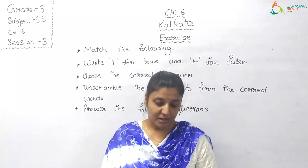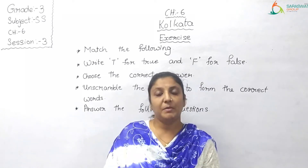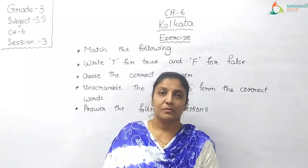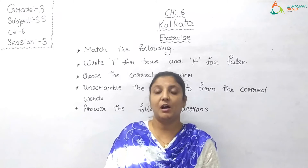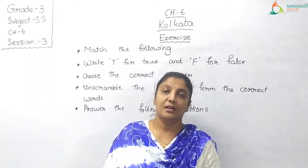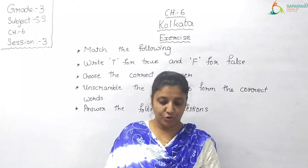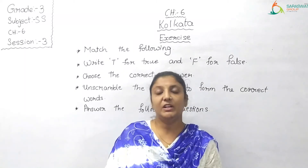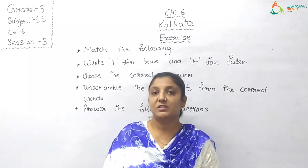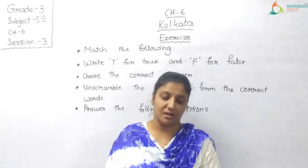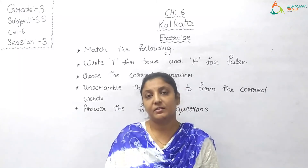B: The climate of Kolkata is mostly hot and humid. Is it true? No — false. Because it is not hot, it is warm and humid. So write F. C: Four villages were joined to form Kolkata. Is it true? No — only three villages were joined, not four. So write F.